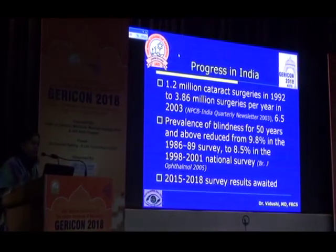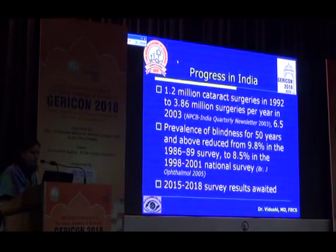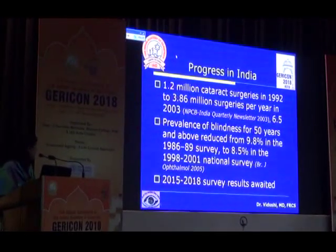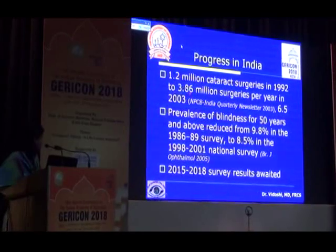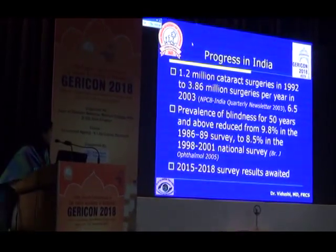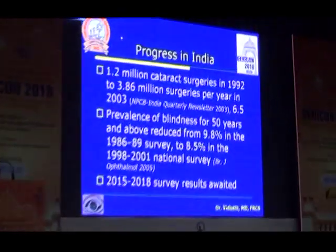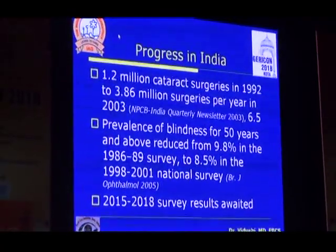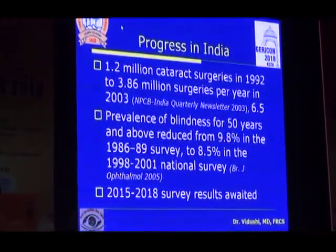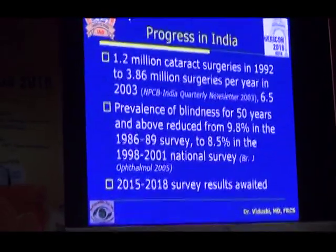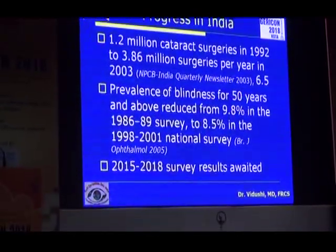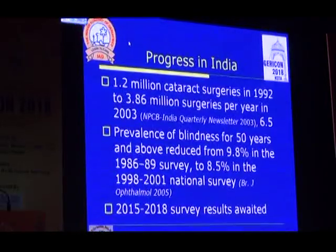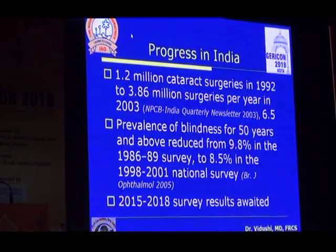India has had a lot of progress, so it is not all grim. The number of cataract surgeries has risen dramatically: 1.2 million in 1992, then 3.86 million, and currently we do over 6.5 million cataract surgeries per year — more than what is done in many larger countries. The prevalence of blindness has also come down in the above-50 age group, though survey results are still officially awaited.